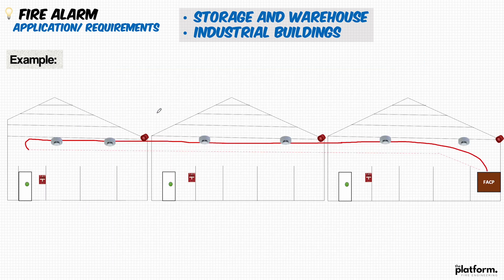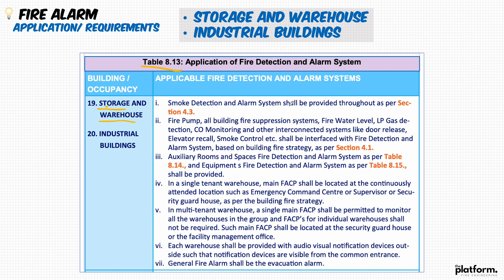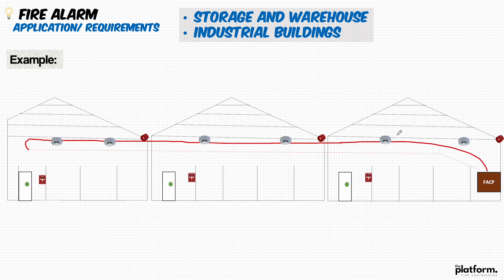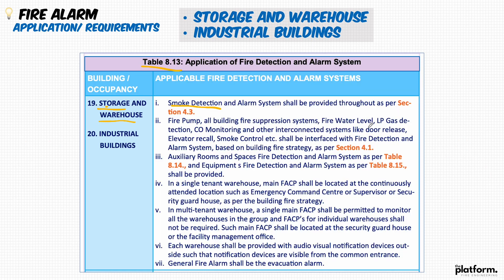I have drafted a quick layout for three warehouses connected together. We will be reading point by point and then try to apply it to this layout. Point number one: a smoke detection and alarm system shall be provided throughout, as per section 4.3 — which relates to installation distances and spacing. So smoke detection is required. I have provided a smoke detector in each warehouse. The distances between smoke detectors and the type of devices shall follow what we covered in this course and what is mentioned in the other sections.